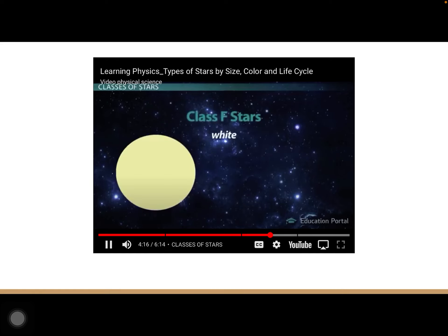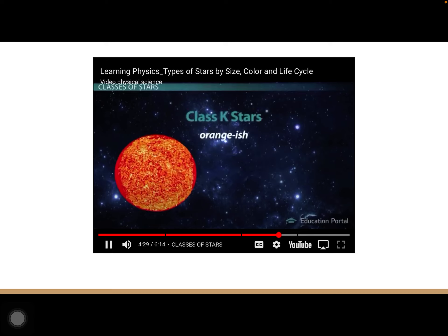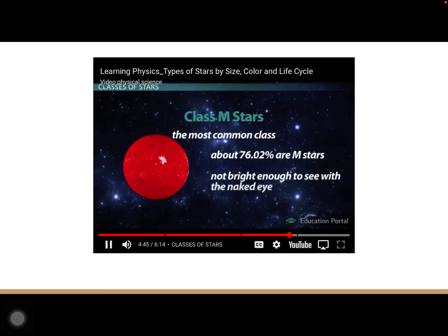Class A stars are white or bluish-white, making up about 0.625% of stars in the sky. Class F stars are white and make up about 3% of stars. Class G stars are yellowish-white — our sun is a Class G star — and are more common at about 7.5% of stars. Class K stars are orange, slightly cooler than the sun, making up about 12% of stars. Class M stars are the most common at about 76.02% of stars, but none are bright enough to see with the naked eye. Most Class M stars are red dwarfs, though there are also some giants and supergiants in this class.